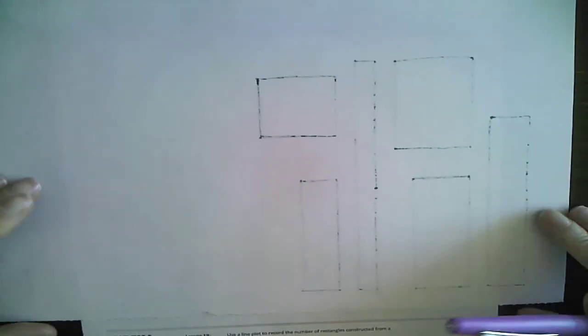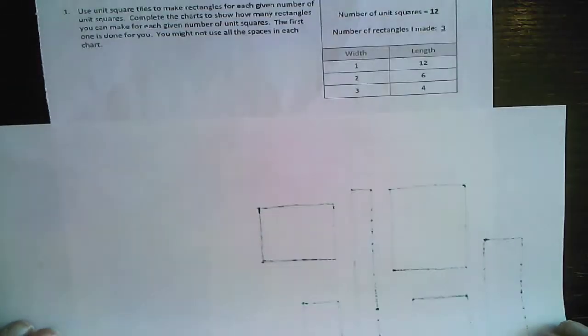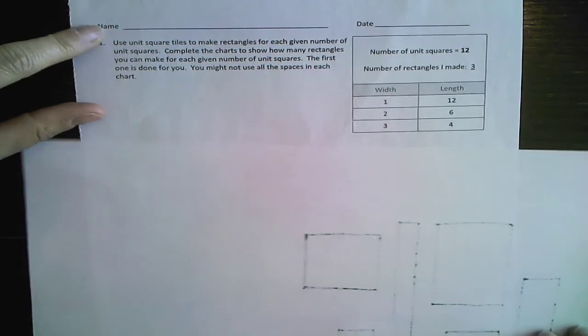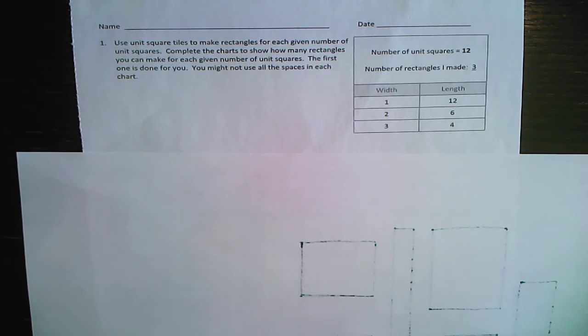So at the top, I have this covered for a reason. Let's read it together. It says, use unit square tiles to make rectangles for each given number of unit squares. Complete the charts to show how many rectangles you can make for each given number of unit squares. The first one is done for you. You may not use all the spaces in each chart.